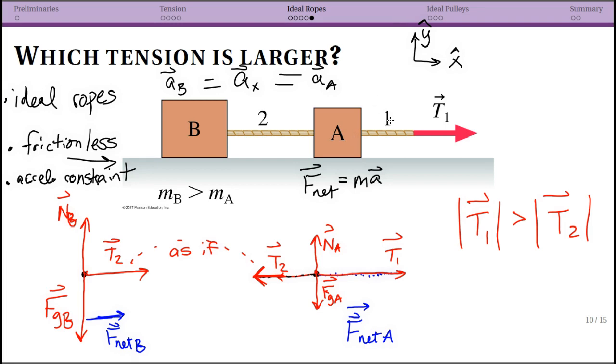Why? Because T2, tension 2, is pulling to the left on block A, tension one is pulling to the right on block A. You need a net force to the right, so the only way this can work is if the force here to the right is bigger. So even though rope 1 is pulling the smaller block, it has the bigger tension. Rope 2 is pulling the bigger block but nothing is pulling back to the left on the block, so that's why rope 1 has the bigger tension.